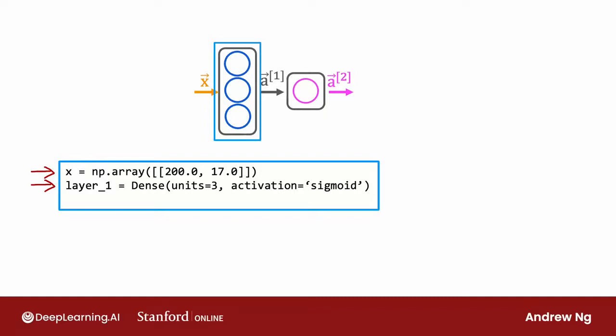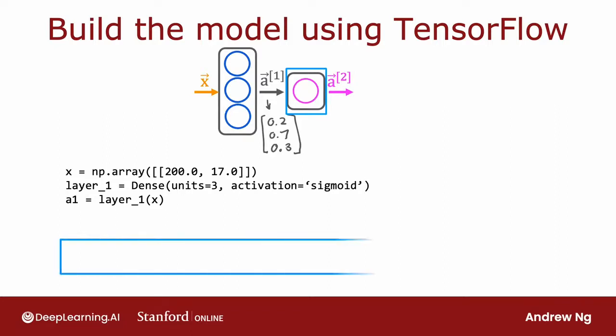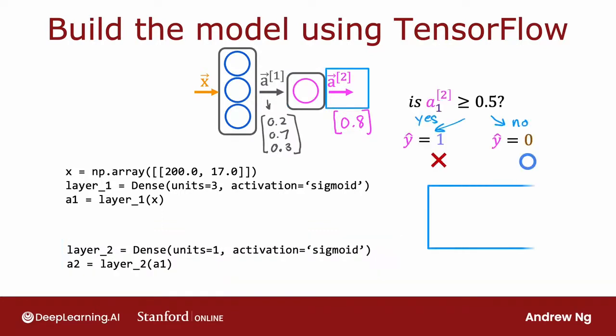For now, we'll just use the dense layer for all our examples. Next, you compute a1 by taking layer_1, which is actually a function, and applying this function to the values of x. That's how you get a1, which is going to be a list of three numbers because layer_1 had three units. So a1 here may be, for illustration, 0.2, 0.7, 0.3. Next, for the second hidden layer, layer_2 would be dense with one unit and again the sigmoid activation function. You then compute a2 by applying layer_2 to a1. That gives you a2, which for illustration is maybe 0.8. Finally, if you threshold at 0.5, you can test if a2 is greater than or equal to 0.5 and set y_hat equals one or zero accordingly. That's how you do inference in the neural network using TensorFlow.